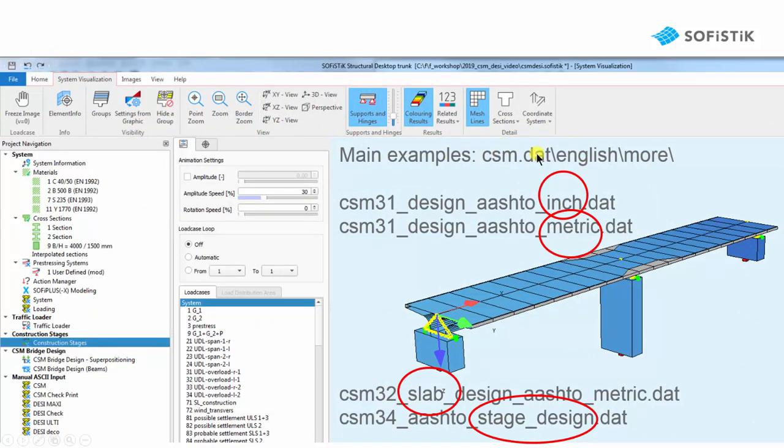You will find it in the CSM.DUT folder, English More. The first is the CSM31 design AASHTO bridge. You can find this with inch values and with metric values.